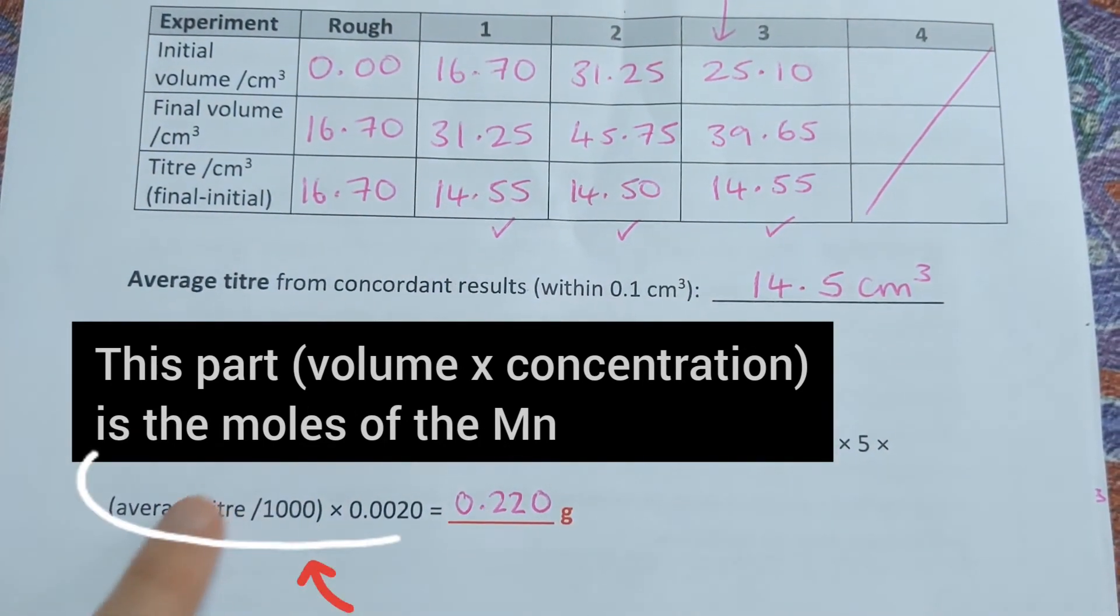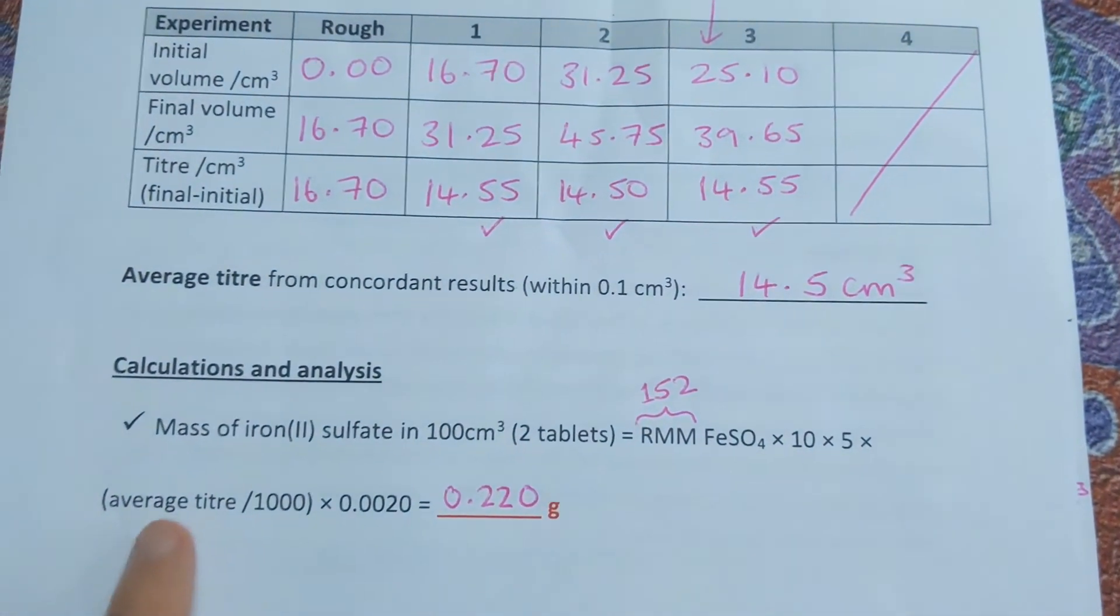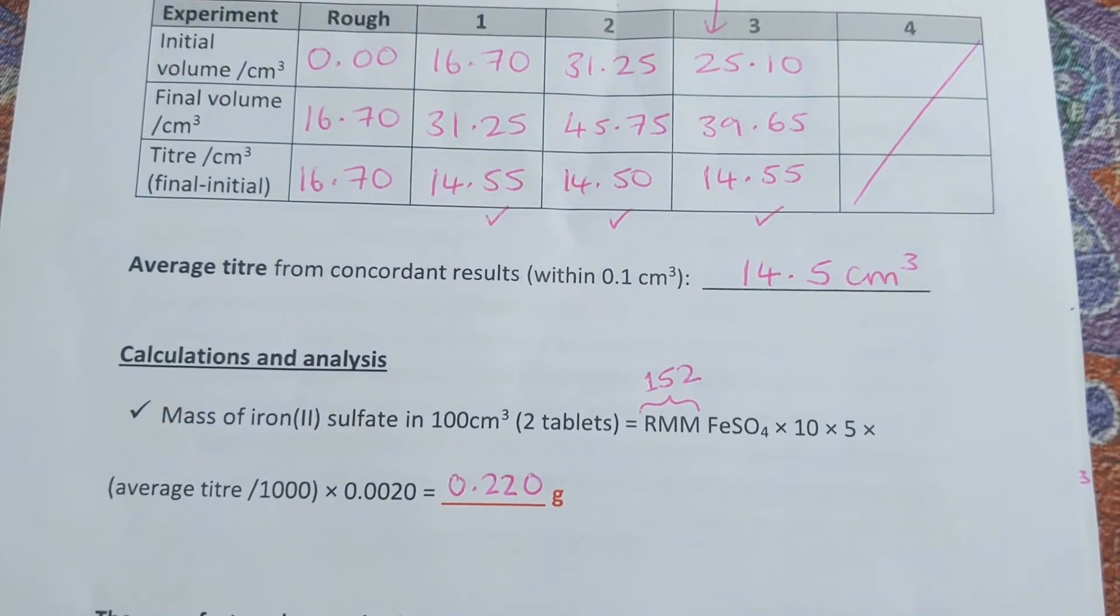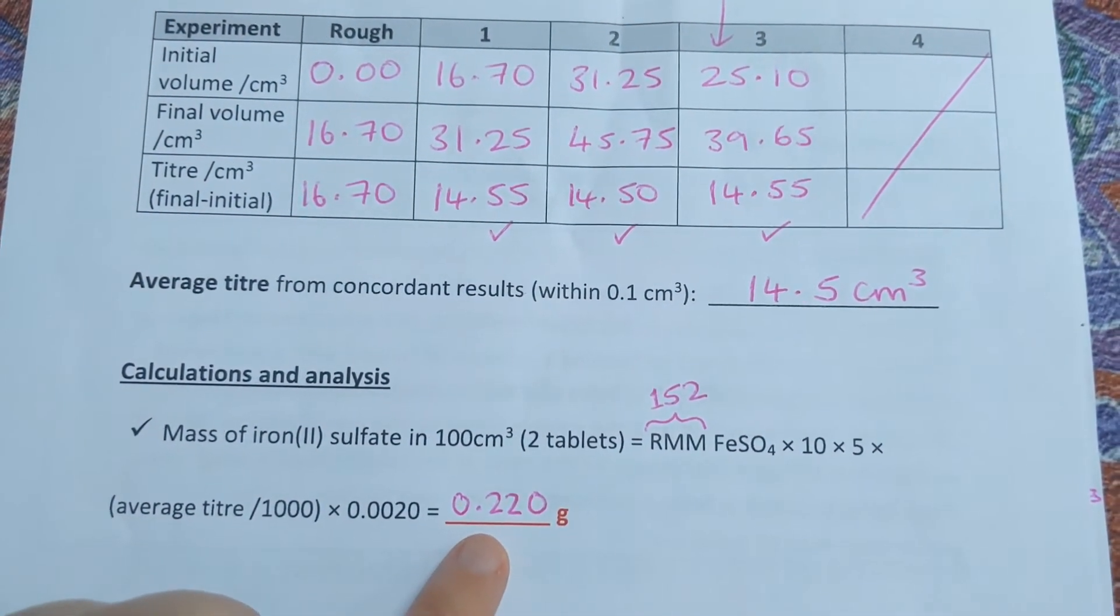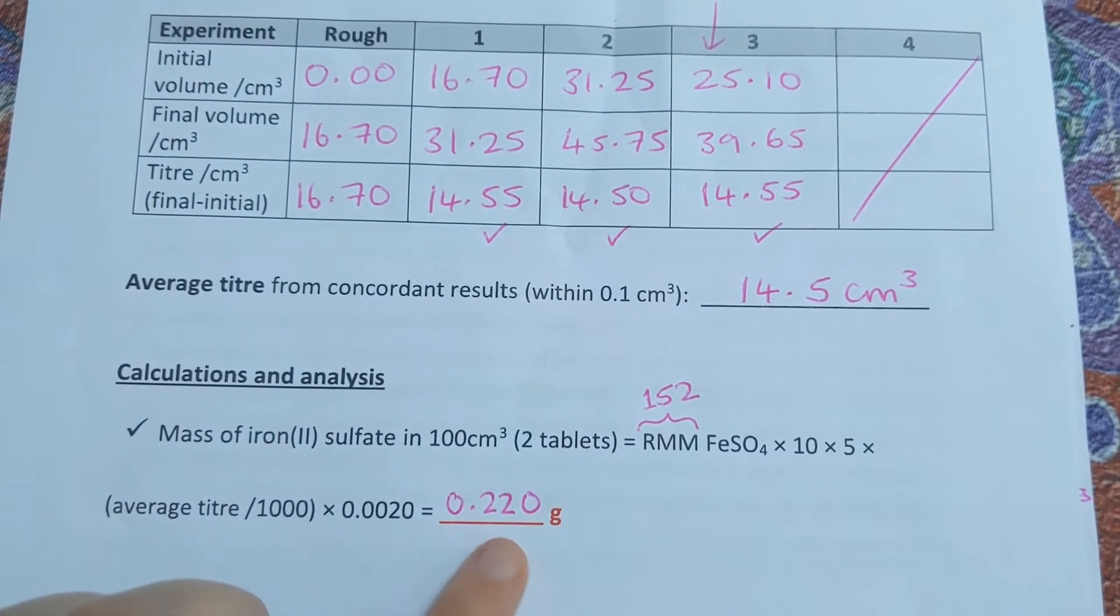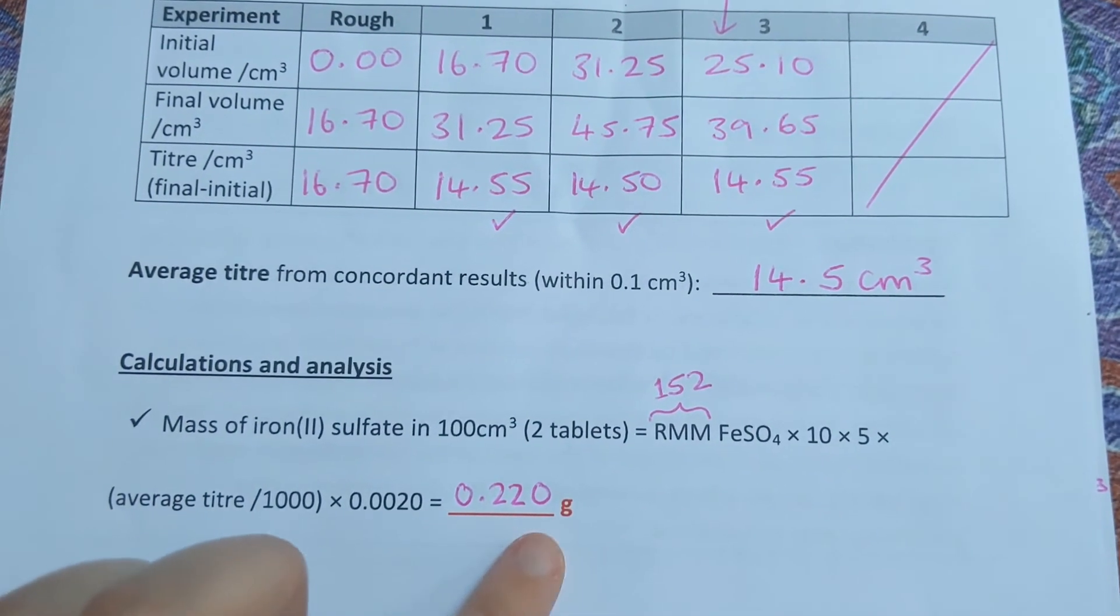Working all that out, you should get a mass in grams that's less than one, around 0.2, and we're going to give that to three significant figures, so I've got 0.220 g.